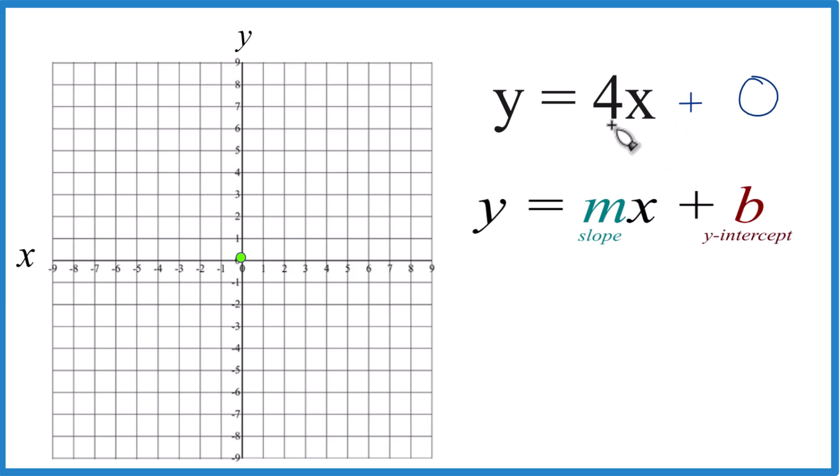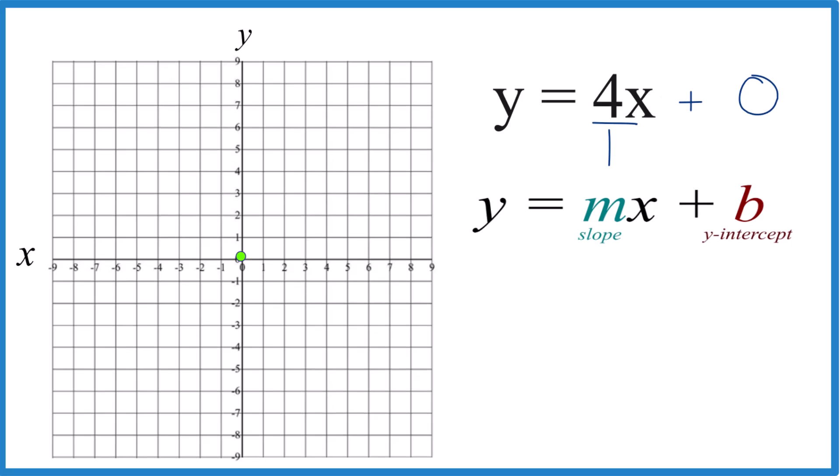For the slope, we have a 4, but it's helpful to think of this as 4 over 1, because now we can say rise over run.